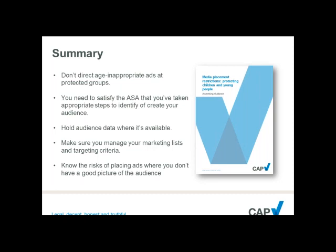Question: Thinking practically, what are the steps advertisers should go through when placing their ads? This is a question of business process. The code requires that advertisers are responsible — legal, decent, honest and truthful. It's the responsibility of advertisers to ensure they have the necessary processes in place, to ensure they are assessing their audience both in terms of who they want to target and who they shouldn't be targeting, and effectively creating an audit trail to demonstrate how they have targeted their desired audience and how they have excluded protected groups.